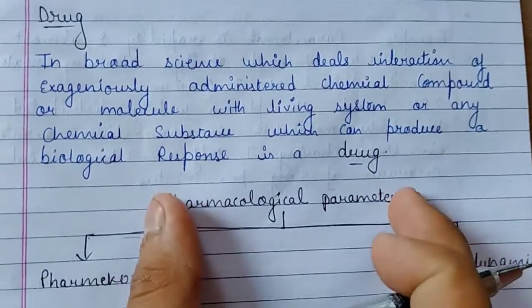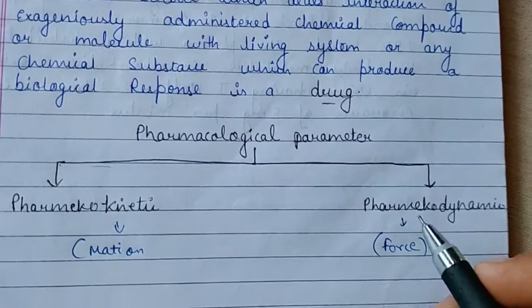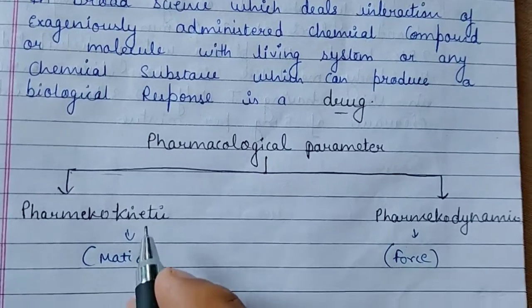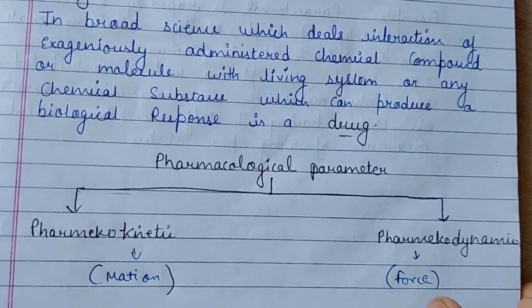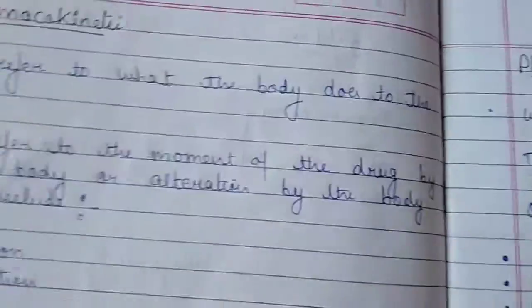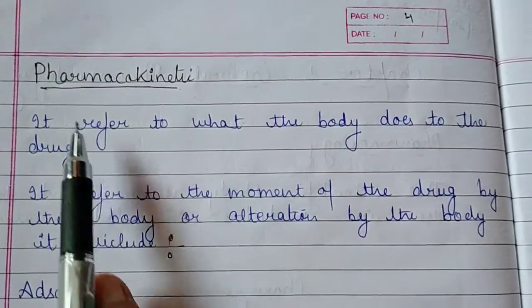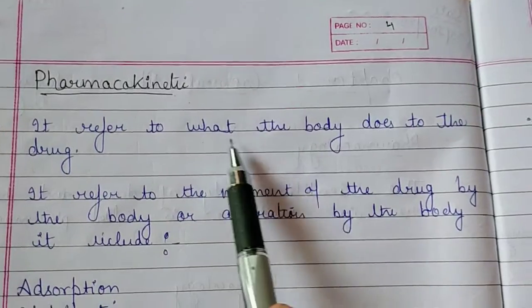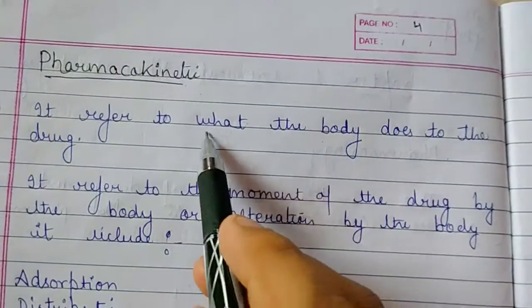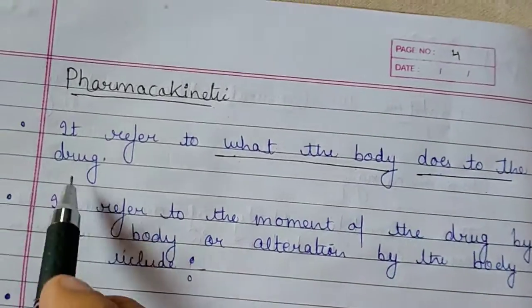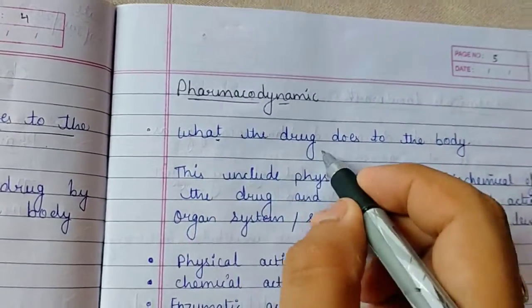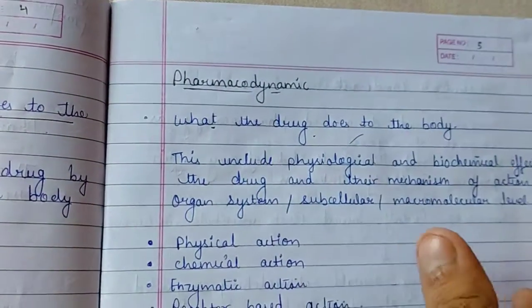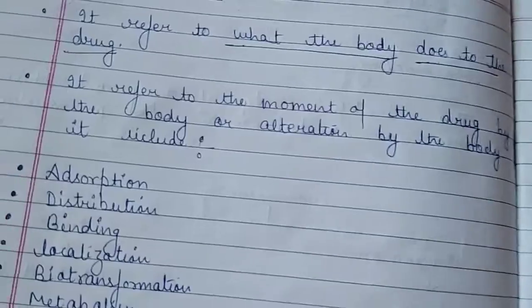Drug parameters are of two types: pharmacokinetics and pharmacodynamics. 'Kinetics' comes from motion of a drug and 'dynamic' comes from force. Pharmacokinetics refers to what the body does to the drug.